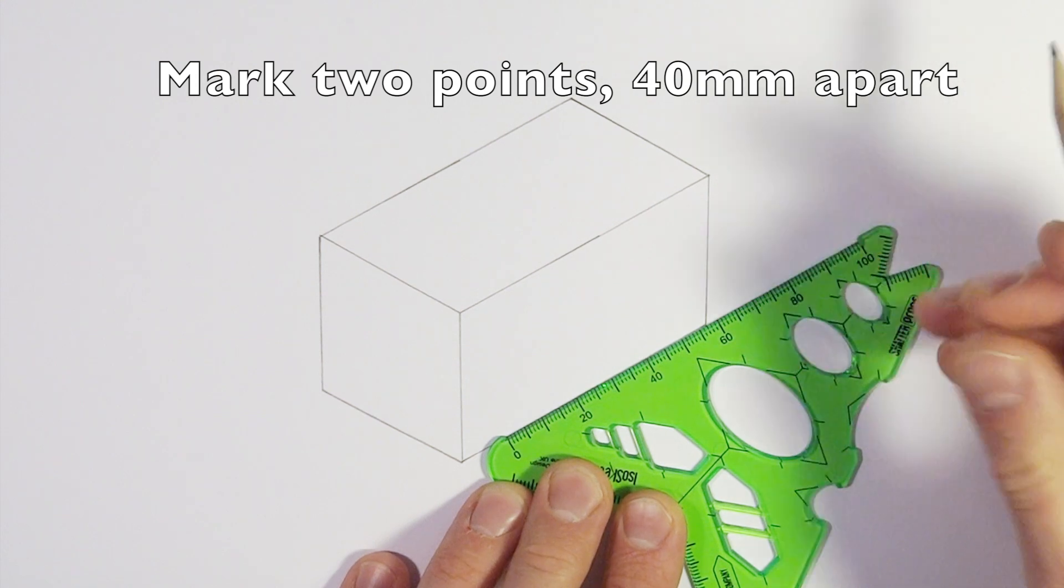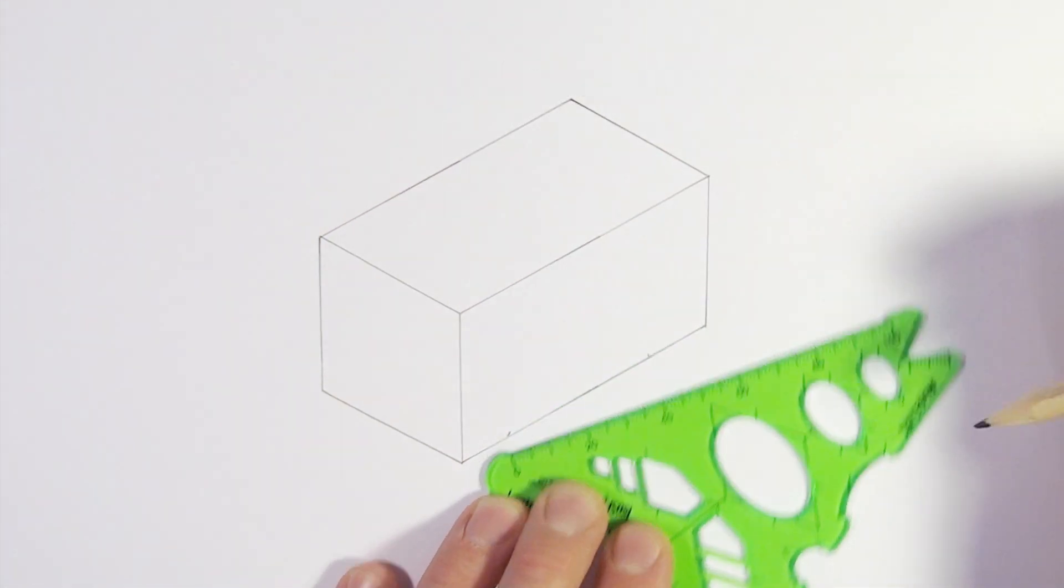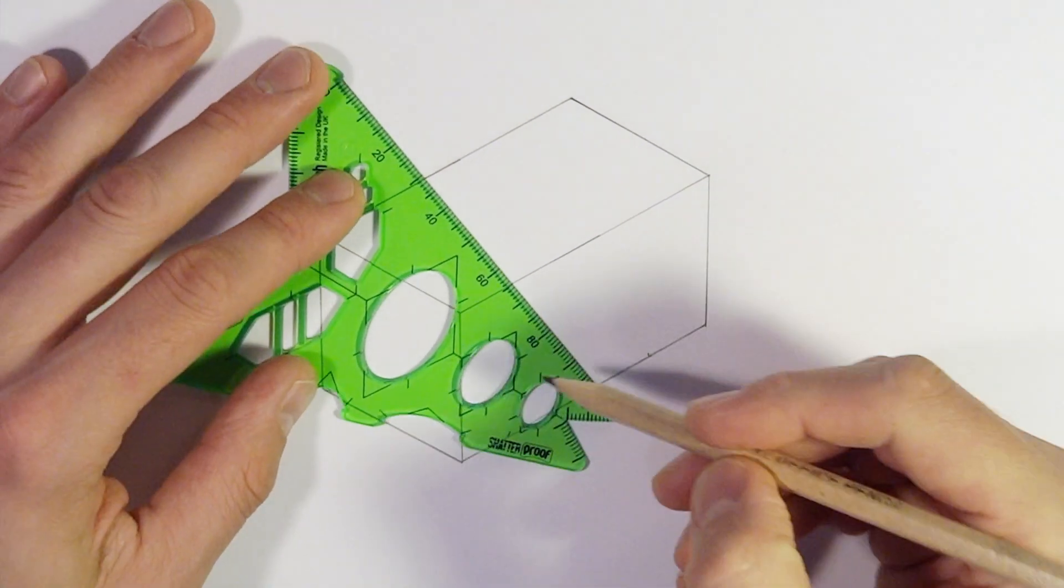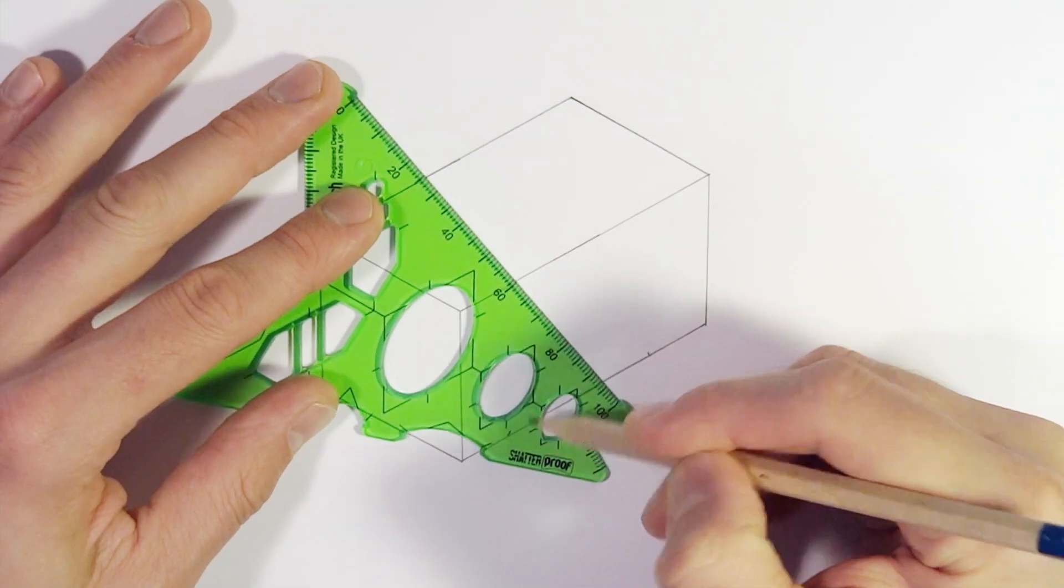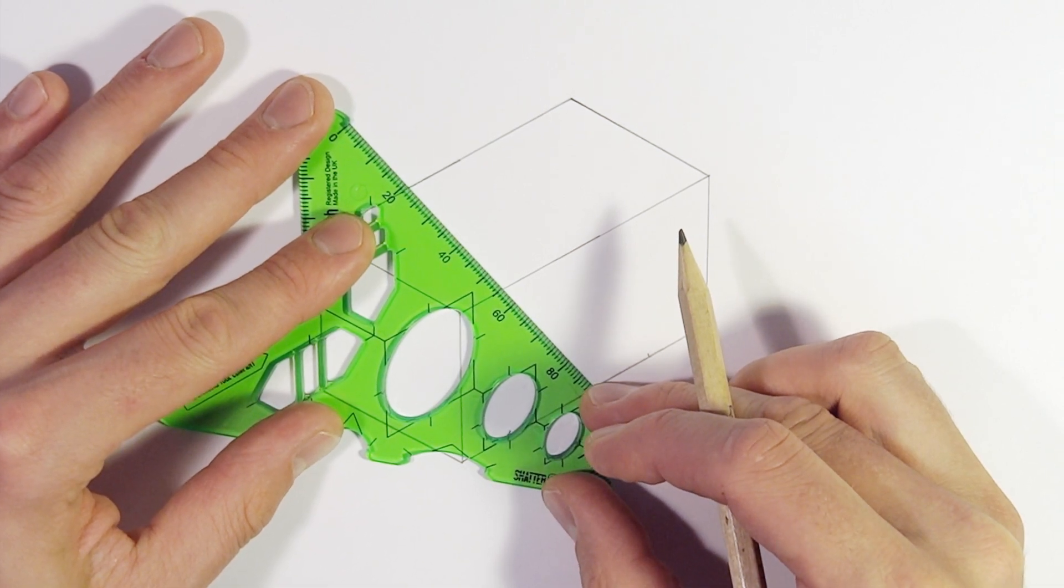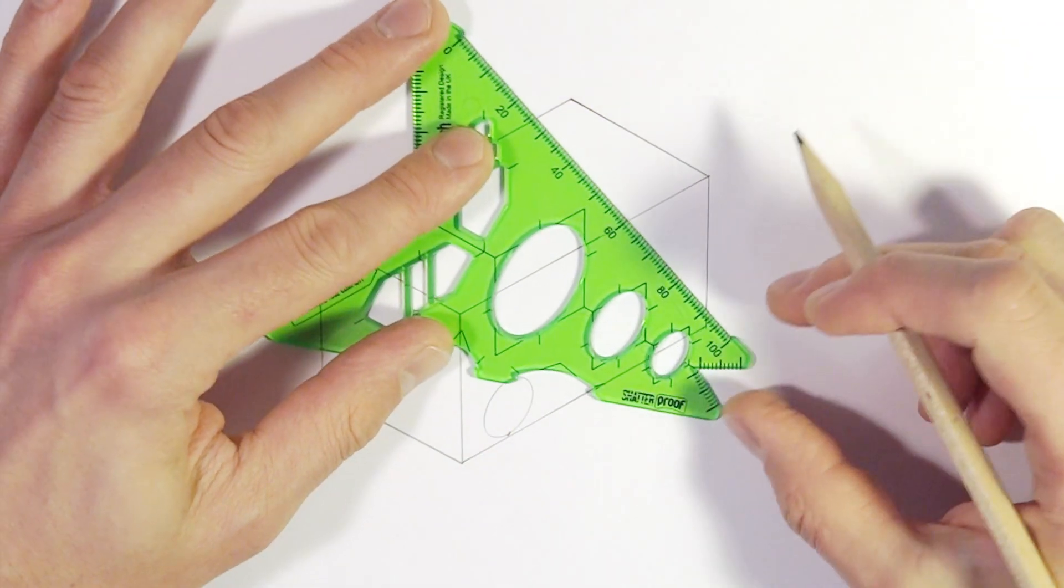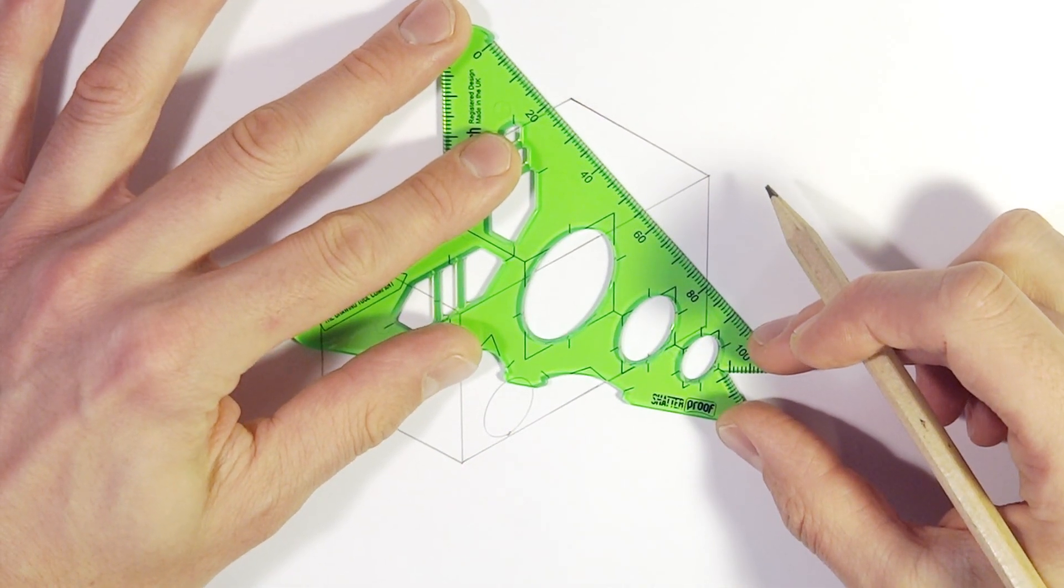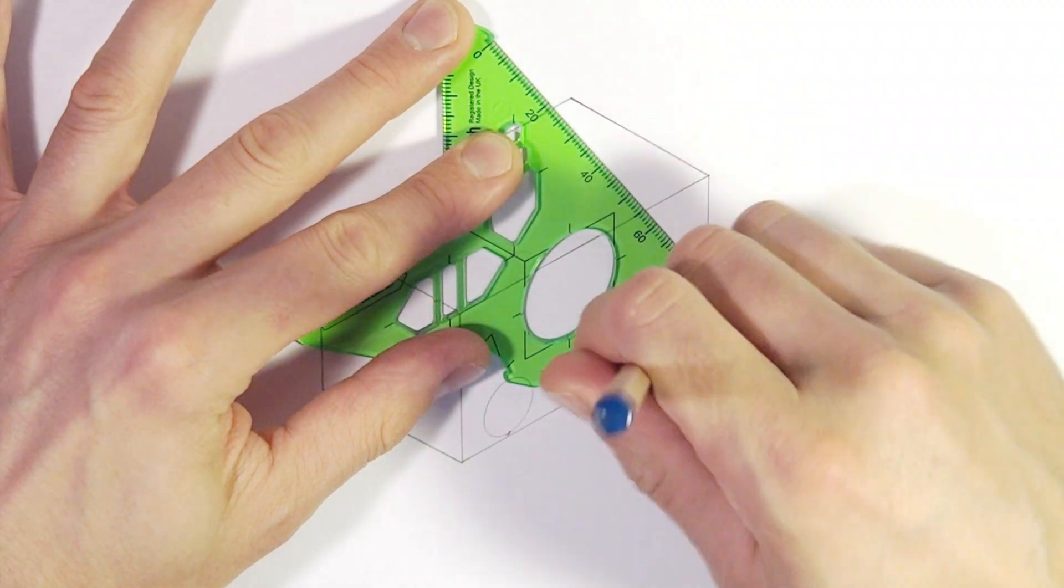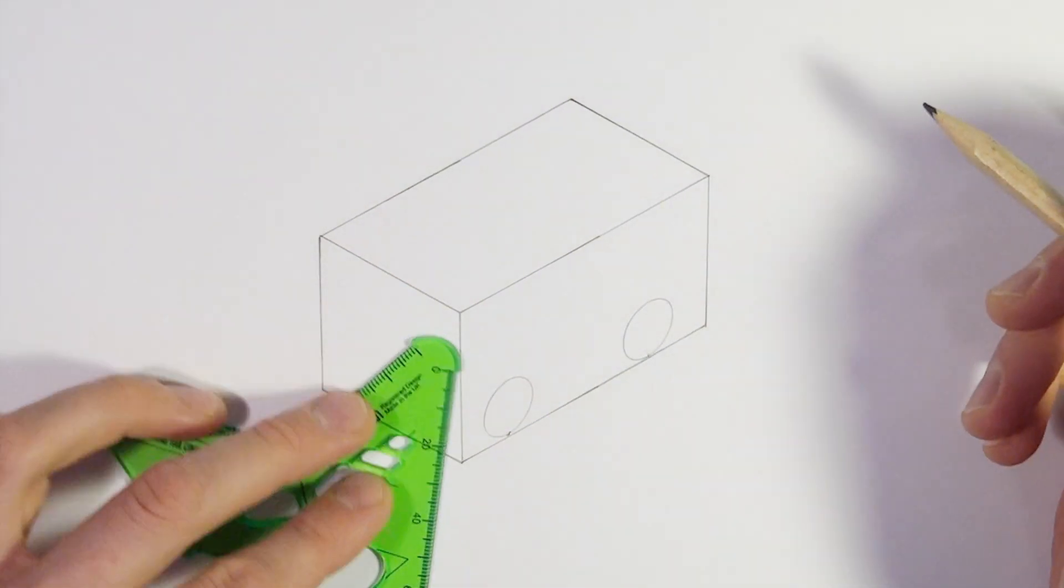Looking on the ruler and working out roughly where you want the wheels to be, marking two dots 40mm or 4cm apart. We're then going to line the middle of the tool up there, the middle of the crosshairs on our ellipse tool, just so it matches up and so that the line is sitting on the bottom of your sketch. We're just going to draw two little circles in the perfect isometric view.